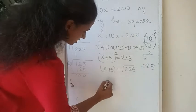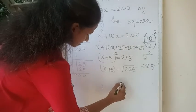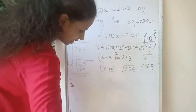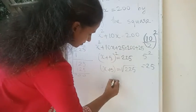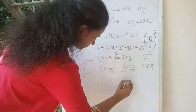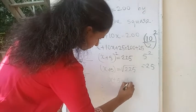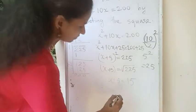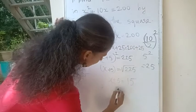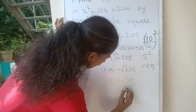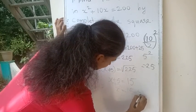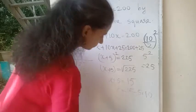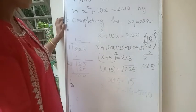15 is the answer of this one. Then x plus 5 equal to 15, so x equal to 15 minus 5. That is 10. 10 is the answer.